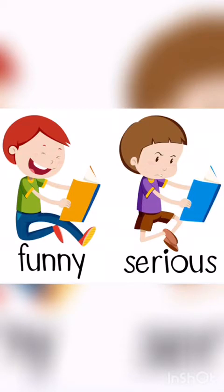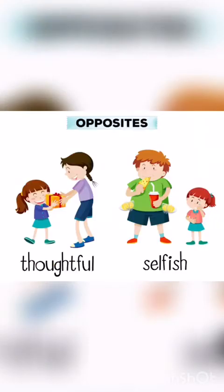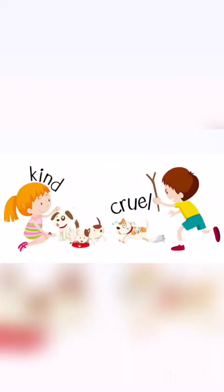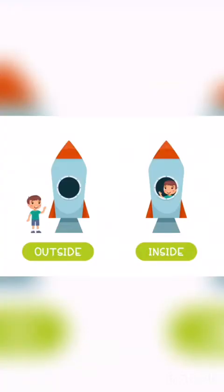The next word is thoughtful. The opposite of thoughtful is selfish. Thoughtful — selfish. The next word is kind. The opposite of kind is cruel. Kind — cruel. The next word is outside. The opposite of outside is inside. Outside — inside.